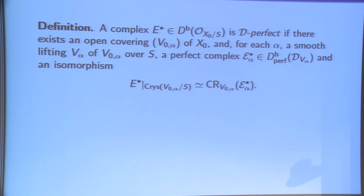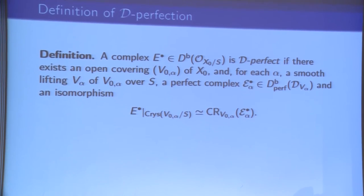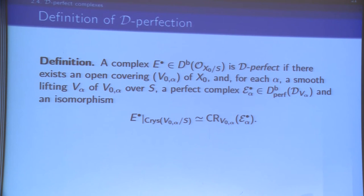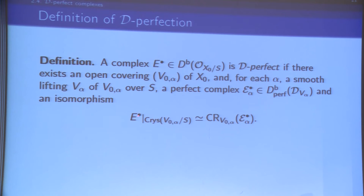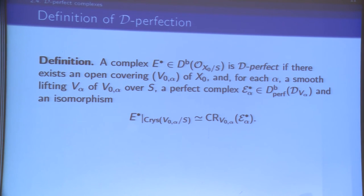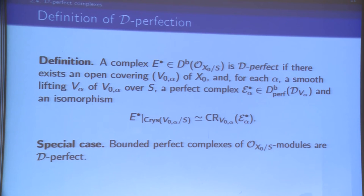Welcome to the definition of D-perfect complexes. I give first a local description: a complex is D-perfect if there is an open covering of the scheme, and for each open subset of the covering a smooth lifting over S and a perfect complex of D-modules over that lifting, such that our initial complex E^• restricted to the crystalline site of the open subset is the CR of this perfect complex. So locally, the complex can be identified with complexes in the essential image of CR for an appropriate lifting. A special case is bounded perfect complexes of O_{X_0/S}-modules, which are also D-perfect.